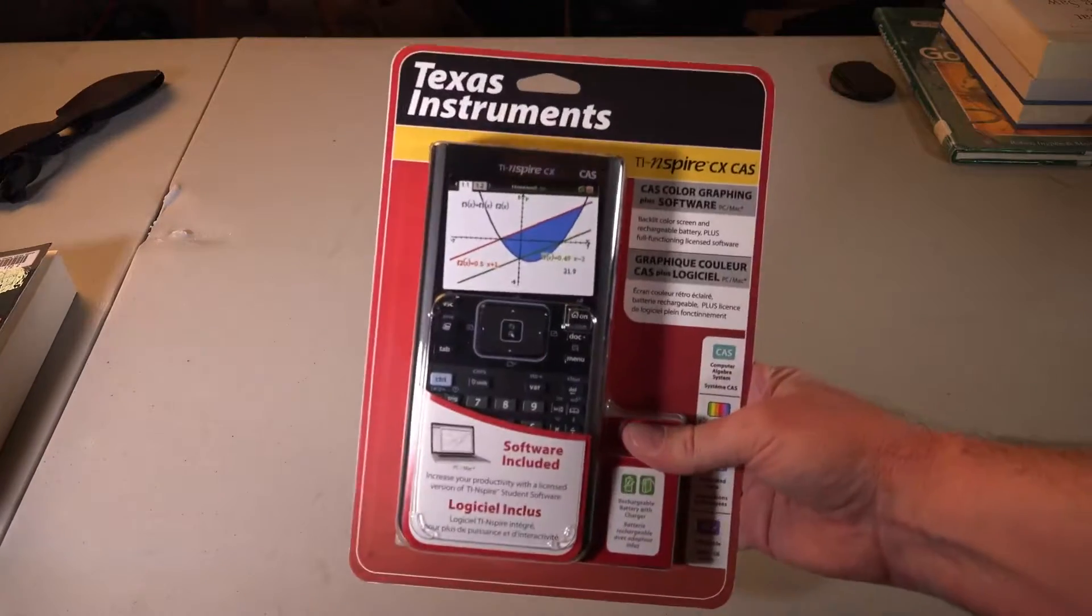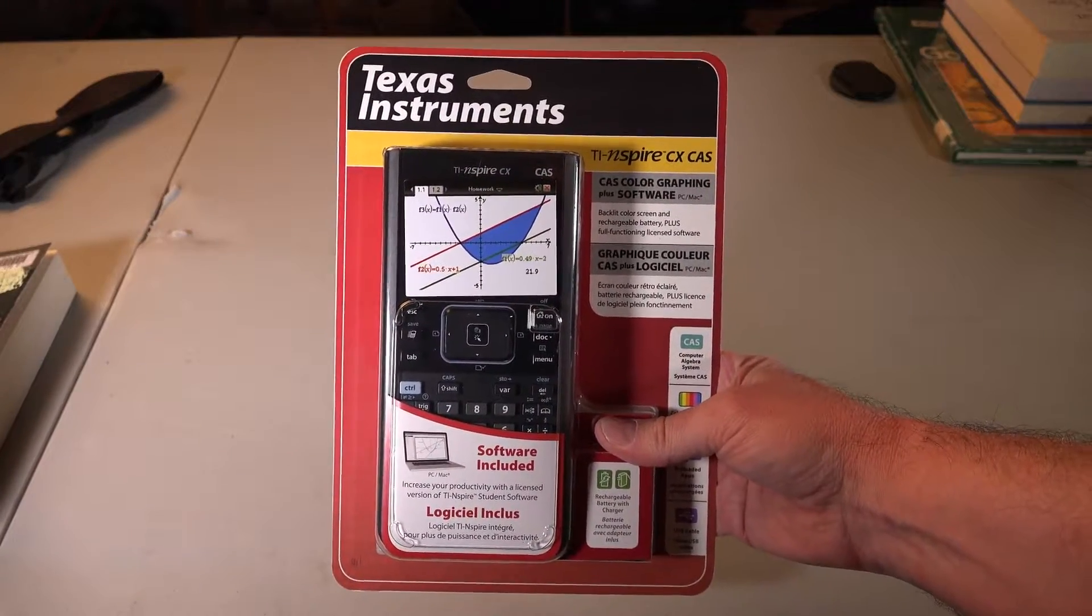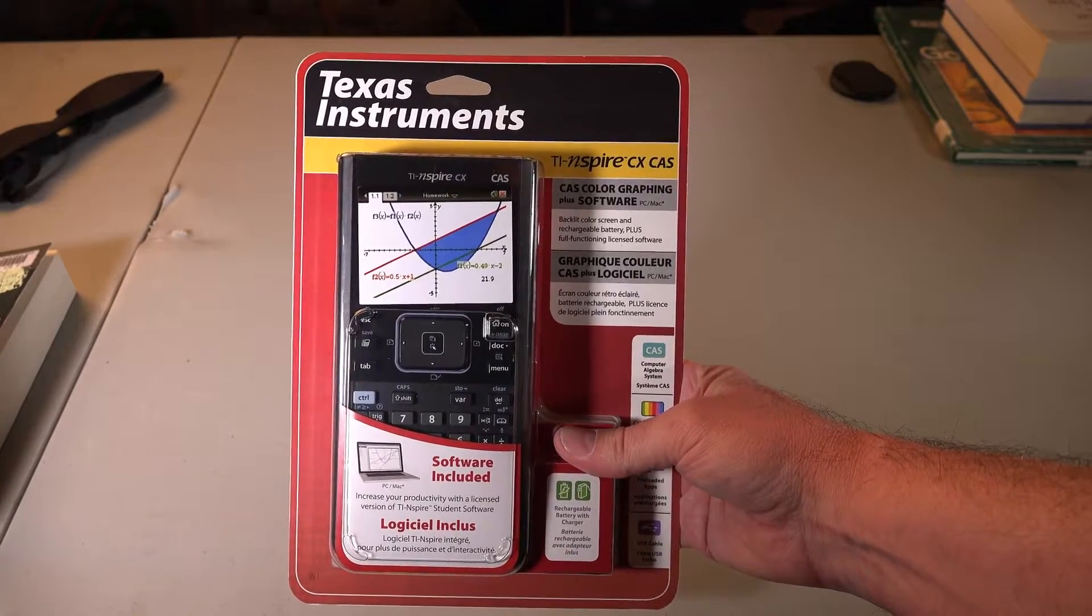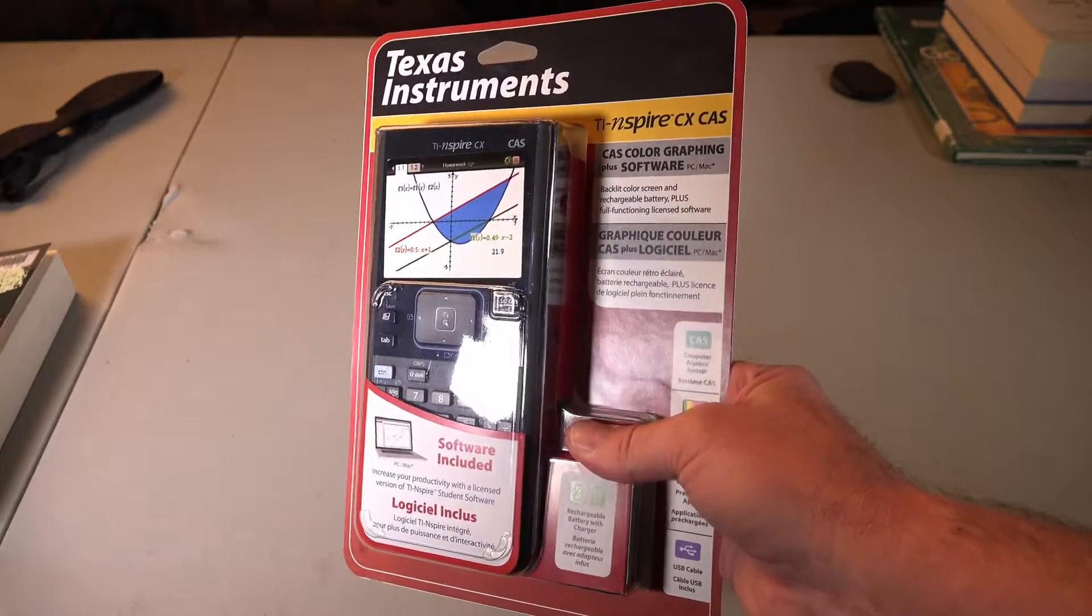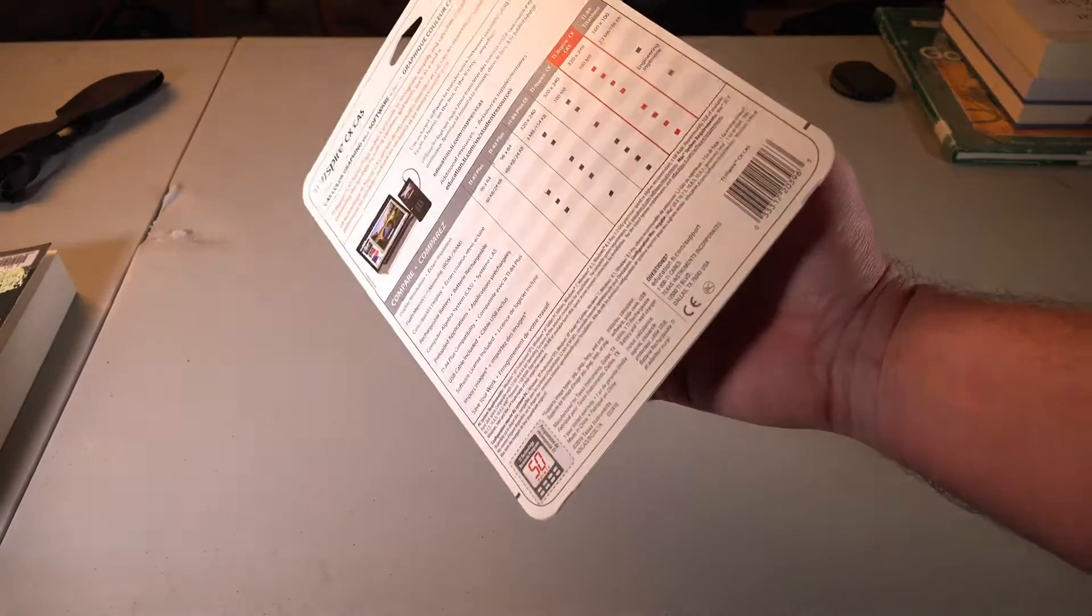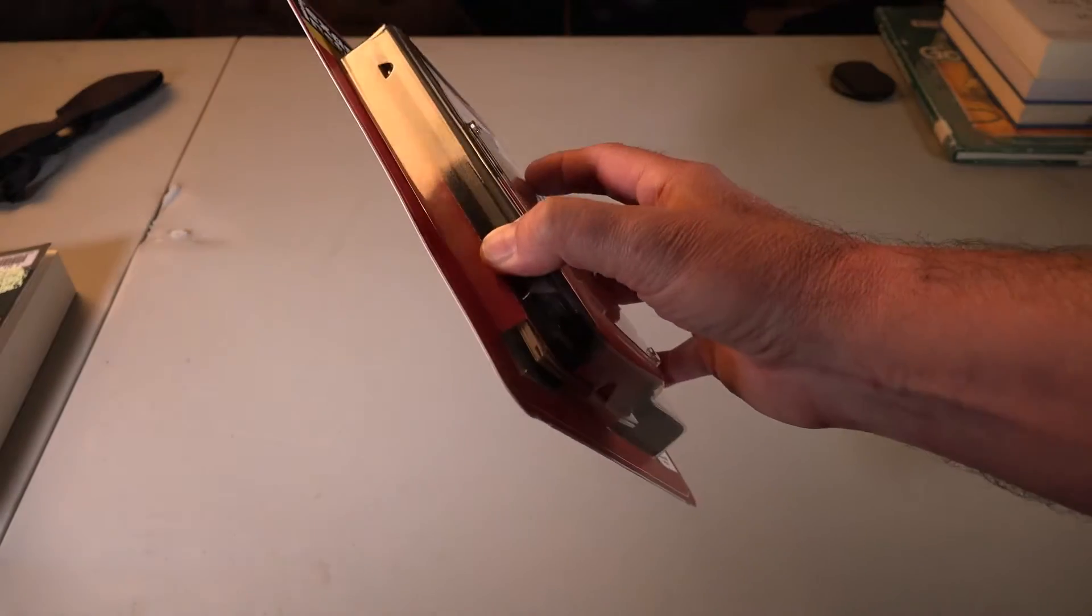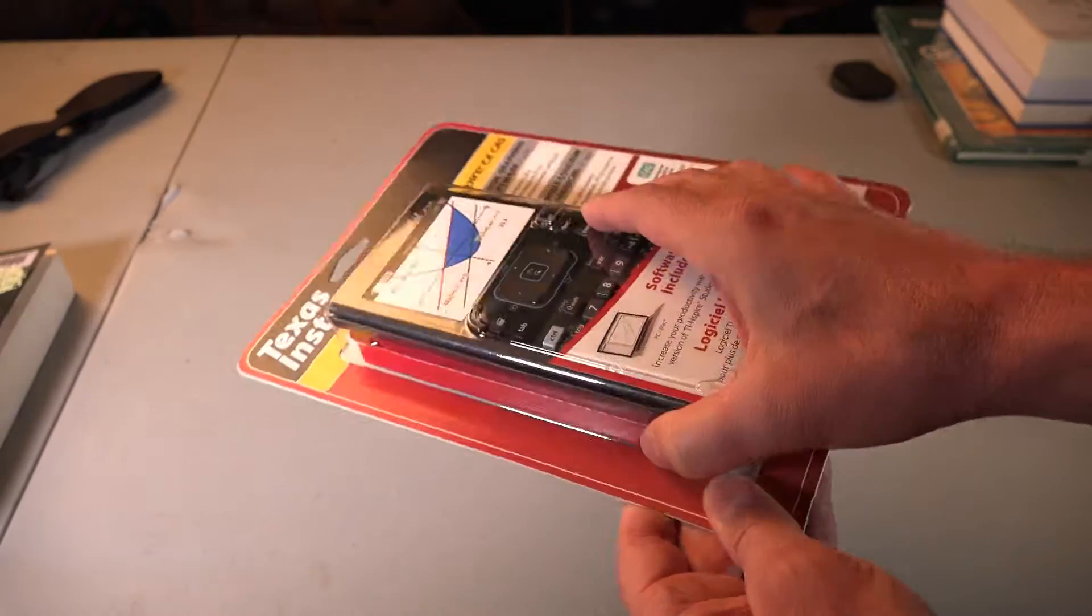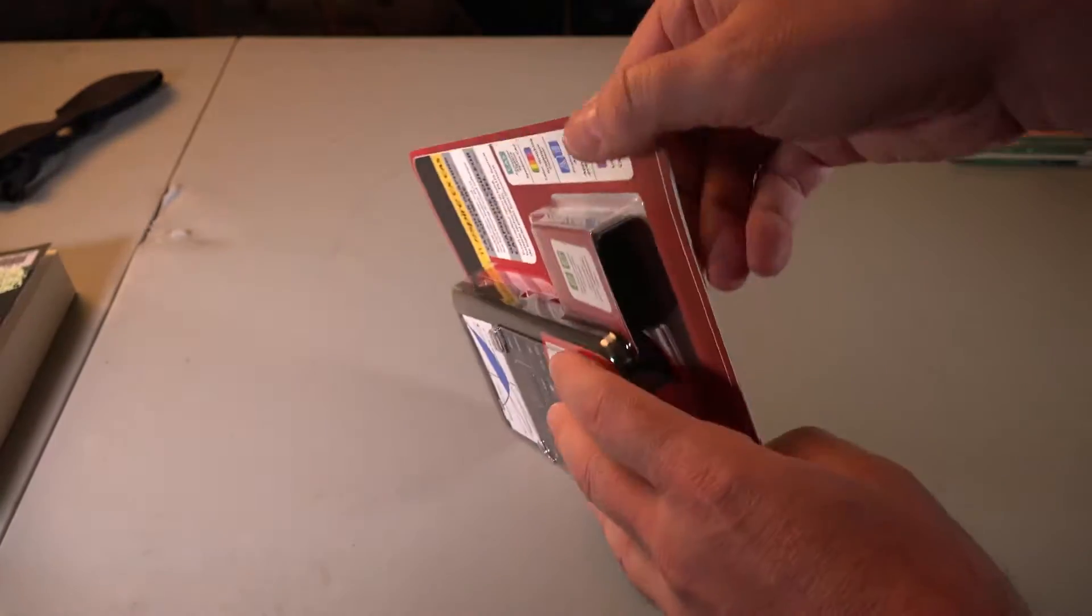I'm just going to do a quick unboxing of the TI Inspire graphing calculator, the CAS model. I thought when I looked at the package it would be all plastic, like all the way around, but it feels like this is kind of like cardboard.